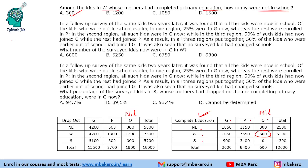So in one region, 25% go to G; in another, 100% go to G; and in the third, 50% go to G. We need to figure out which region is which. It is also given that in all three regions put together, 50% of the kids who were earlier out of school had joined G.